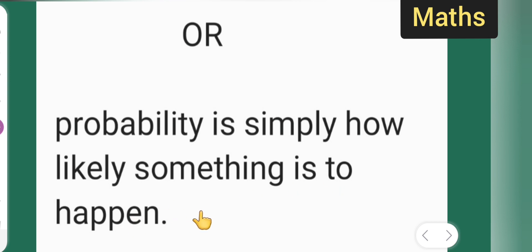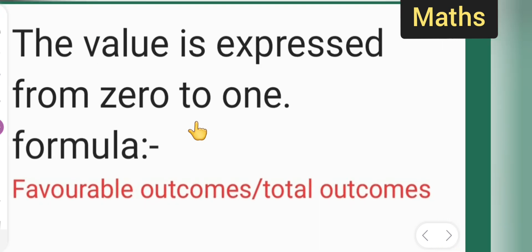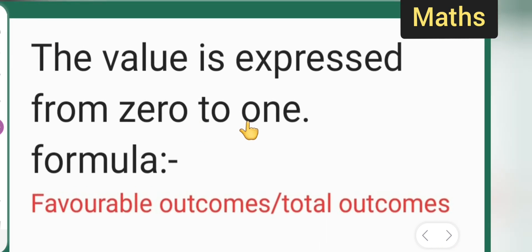You can take down notes. The value is expressed from 0 to 1. The formula is: favorable outcomes divided by total outcomes. You all can take down this formula.